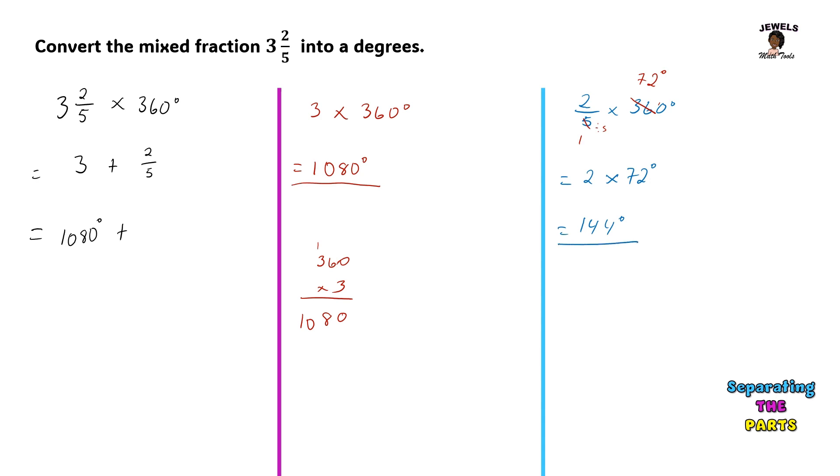Now I'm going to take that 144 degrees, replace my fraction 2/5 with those degrees, and now I'm going to simply add those two numbers together to find out the sum of my degrees when this fraction is converted. Zero plus four equals four. Eight plus four equals 12. Put our 2, carry our 1. One plus one is two, and then we will bring down the last one. So the sum of my degrees is 1224 degrees.